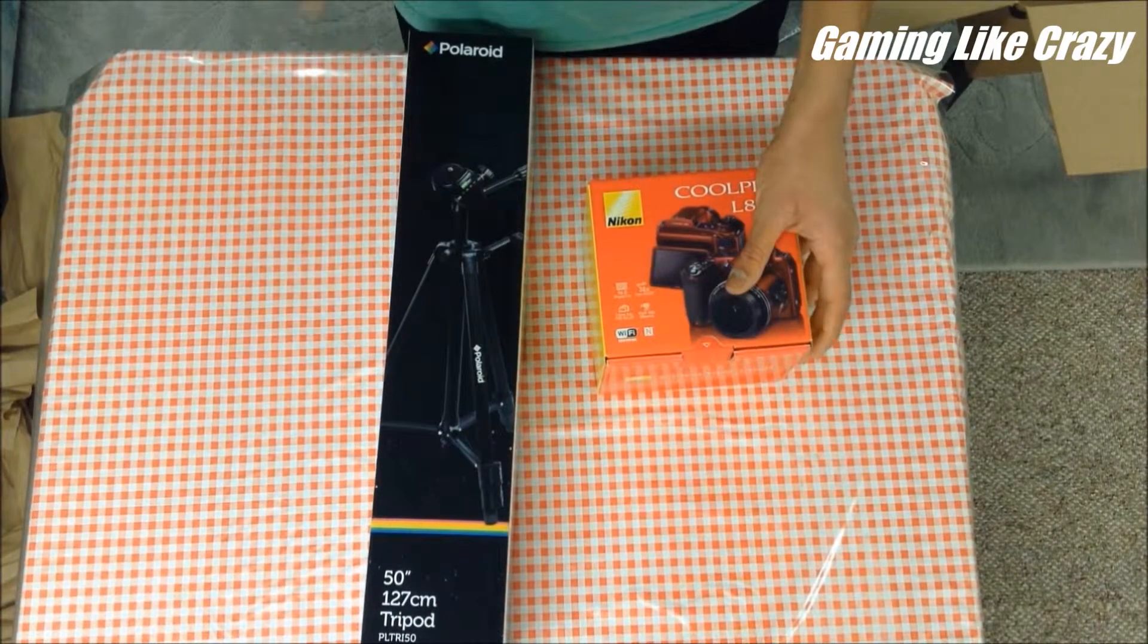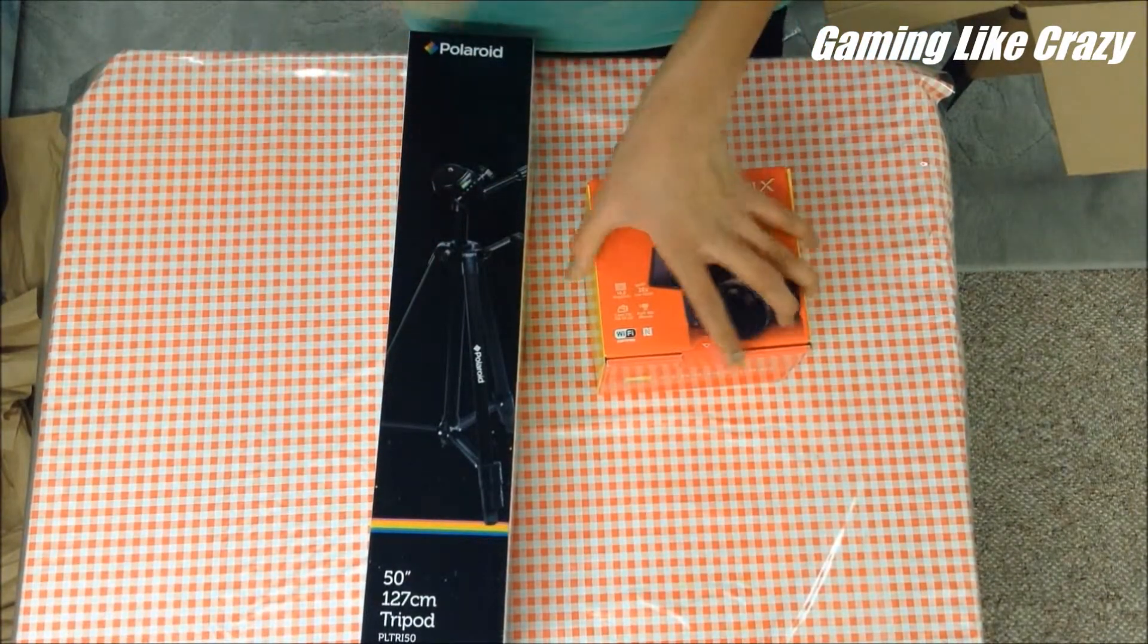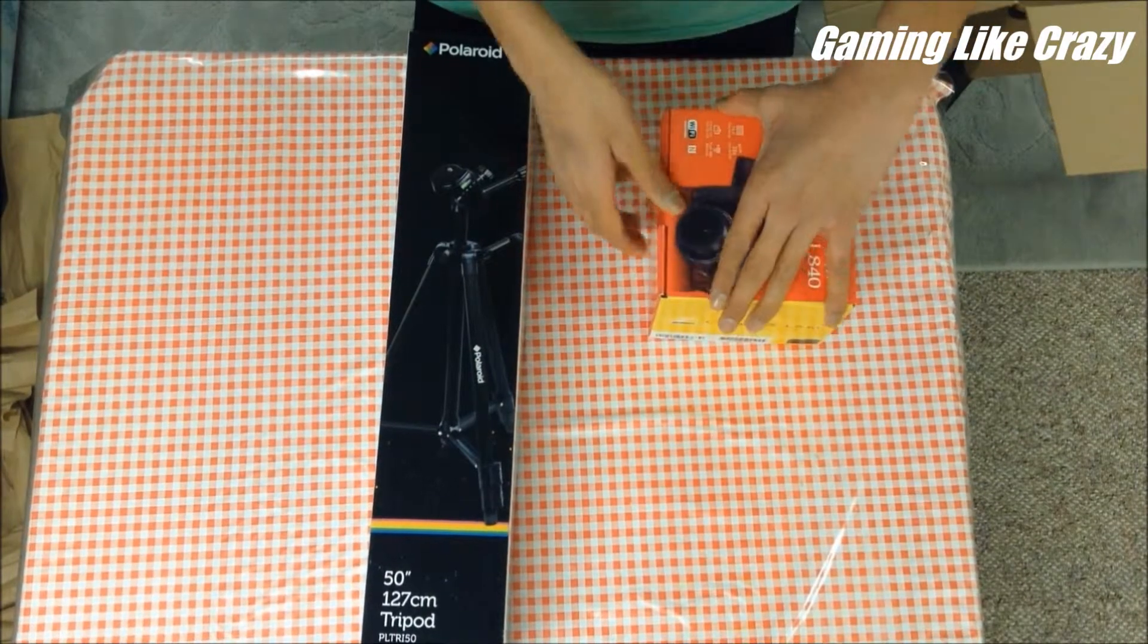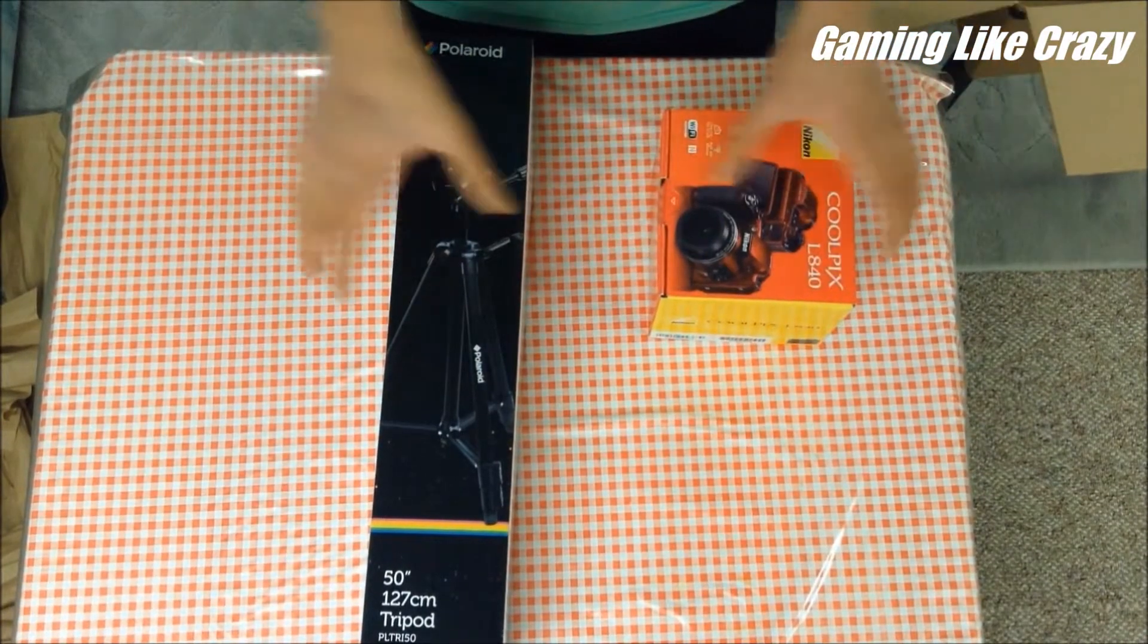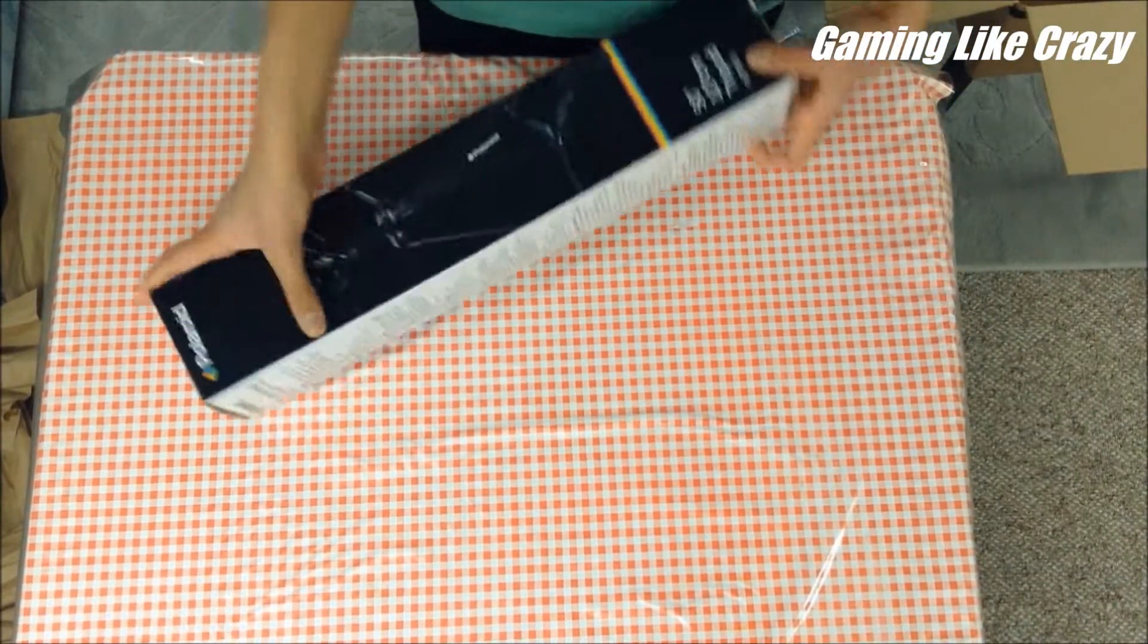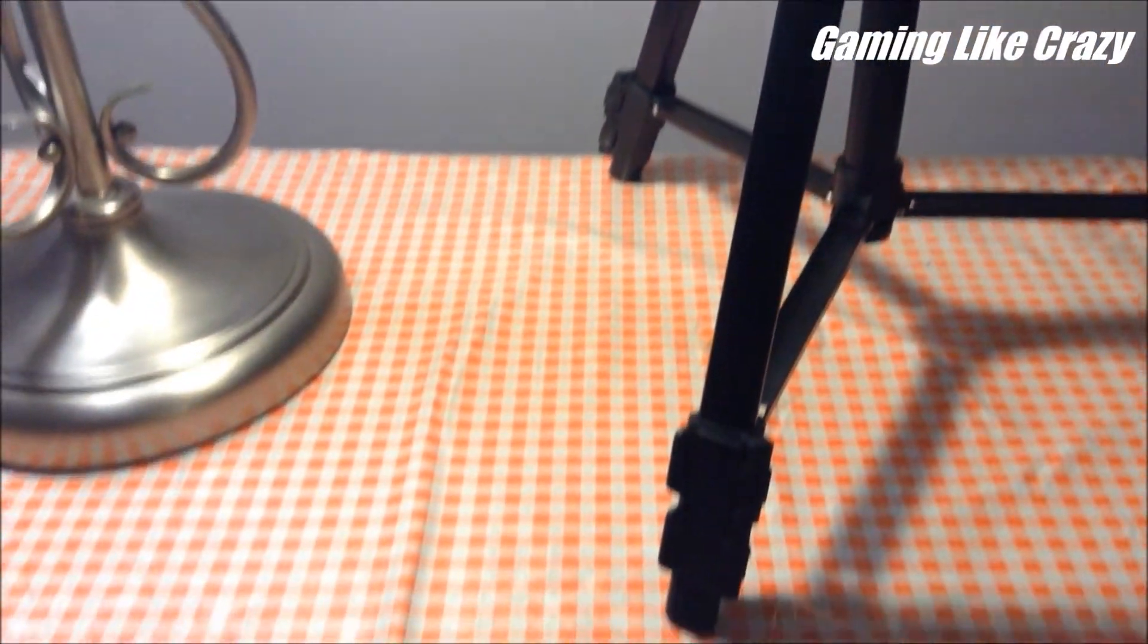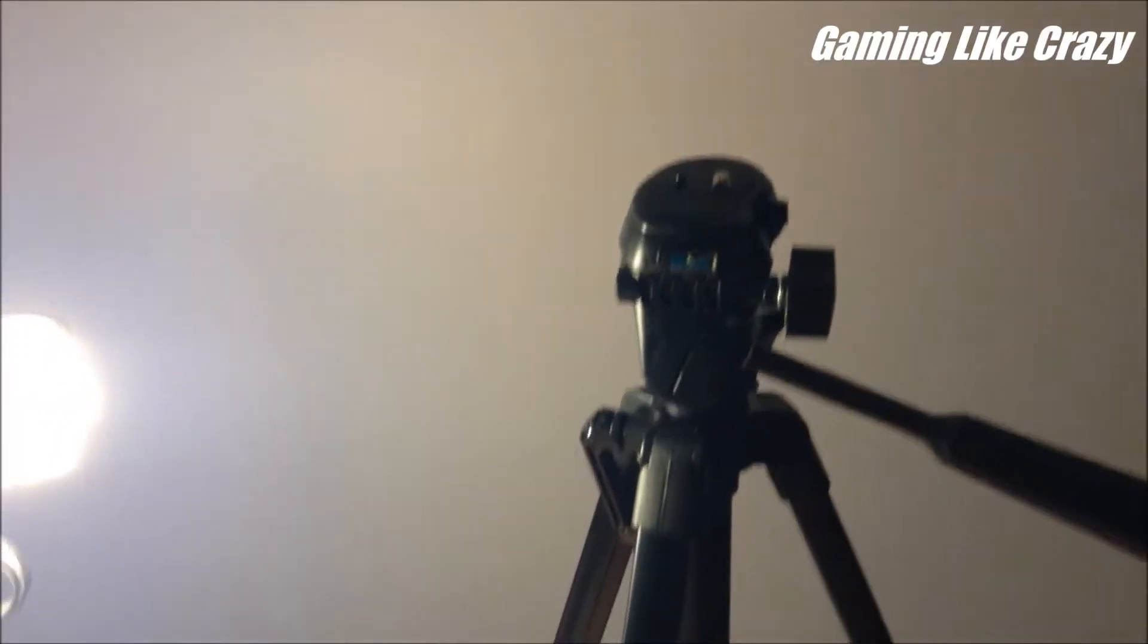So I'm going to first unbox the tripod. This is a Polaroid 50 inch, 127 centimeter tripod stand.